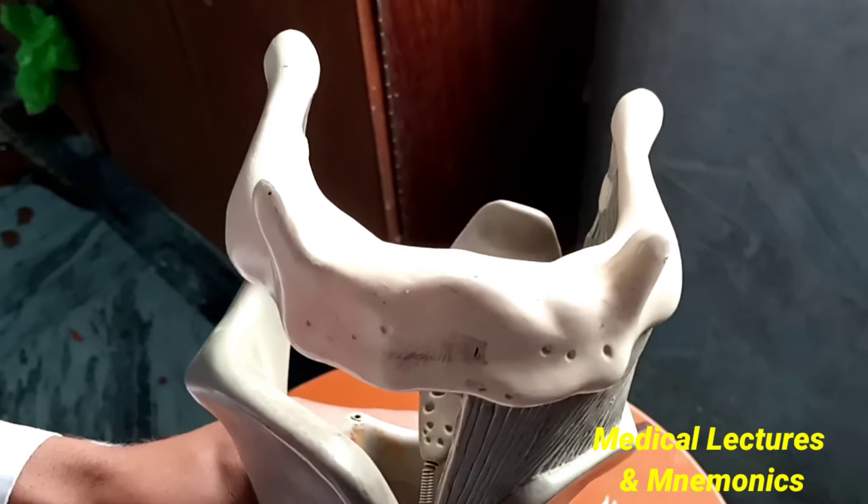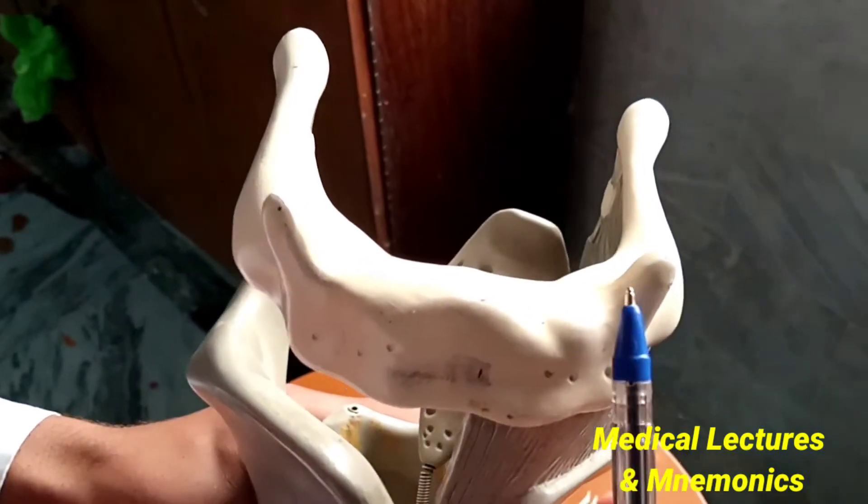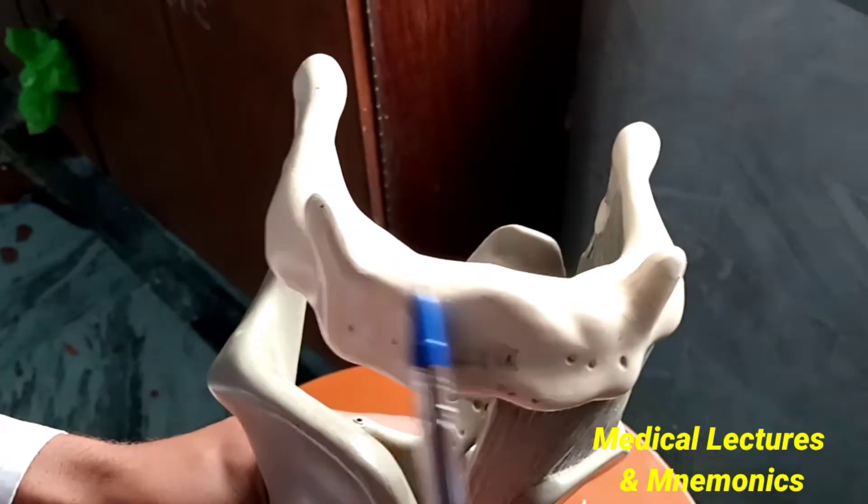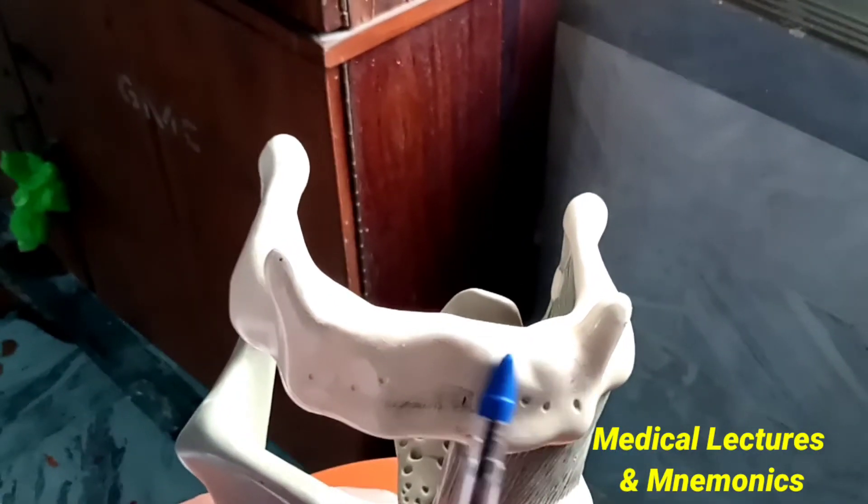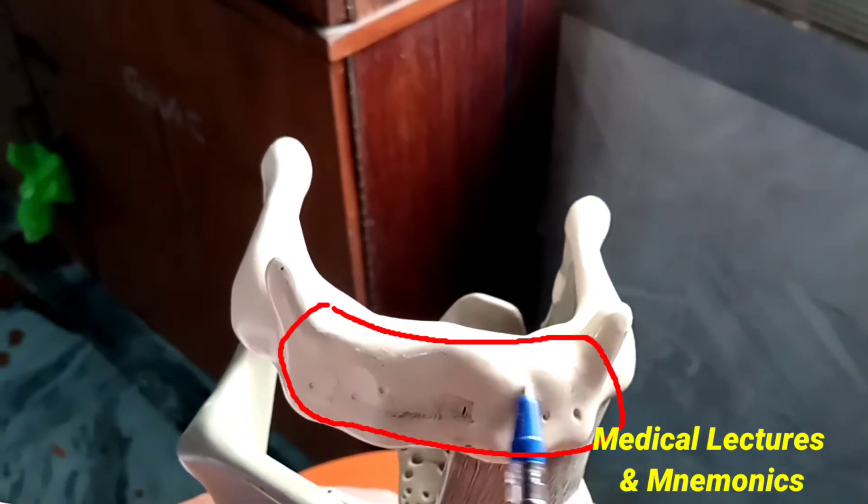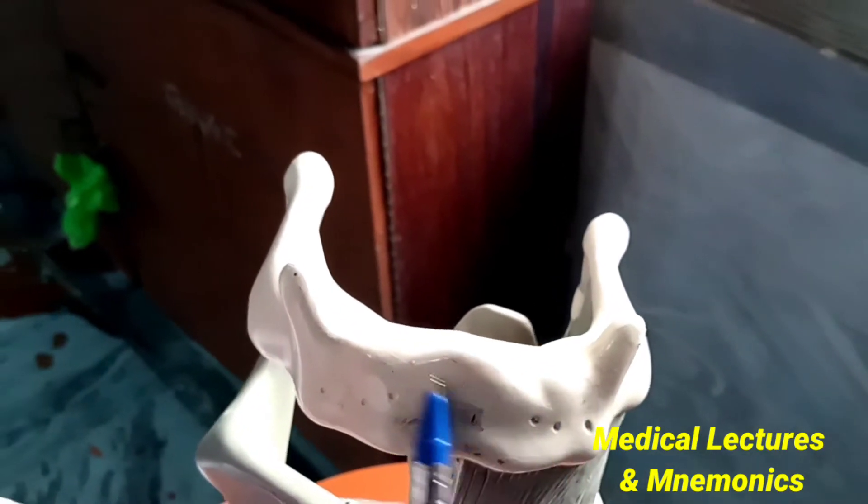This is the body of the hyoid bone, which is horizontal. The body of the hyoid bone is quadrilateral in shape. It has two surfaces: one is the anterior surface, the other is the posterior surface of the body of the hyoid bone.